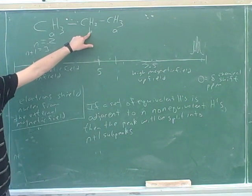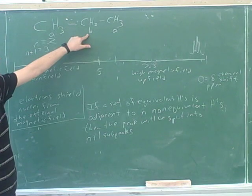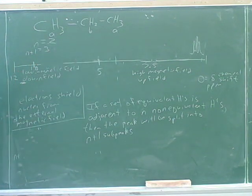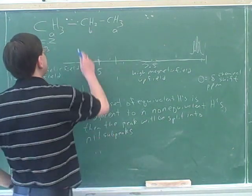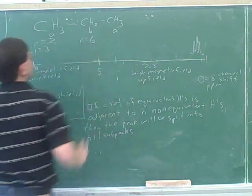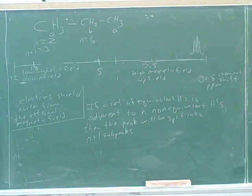Let's try to do the same thing for group B. How many non-equivalent adjacent hydrogens are there adjacent to group B? Three on the left and three on the right, which makes six. You need to count the total number of non-equivalent adjacent hydrogens. So n here shouldn't be three, it should be six.